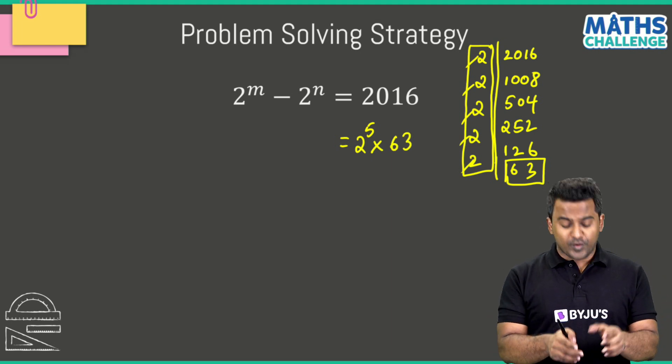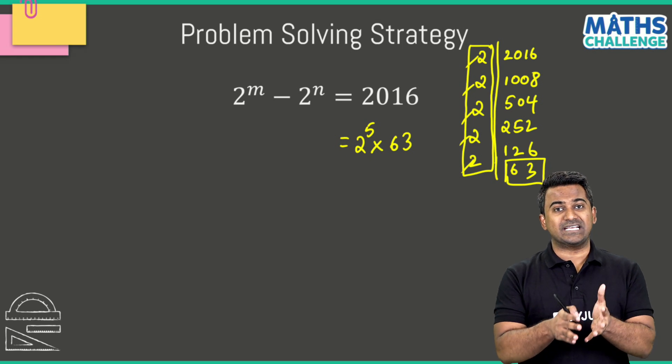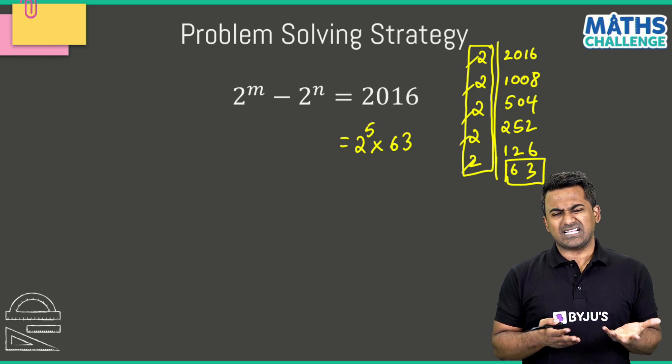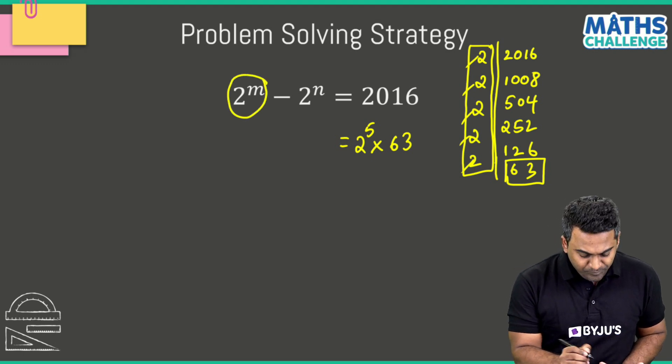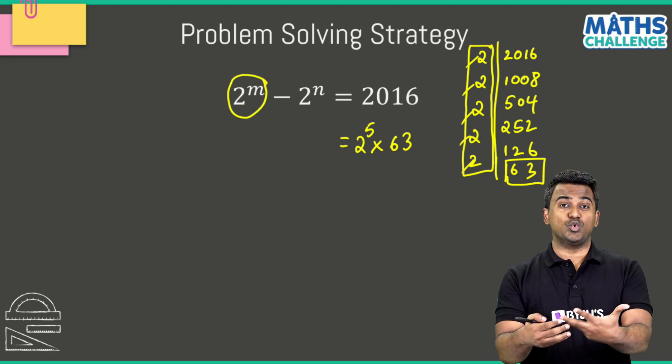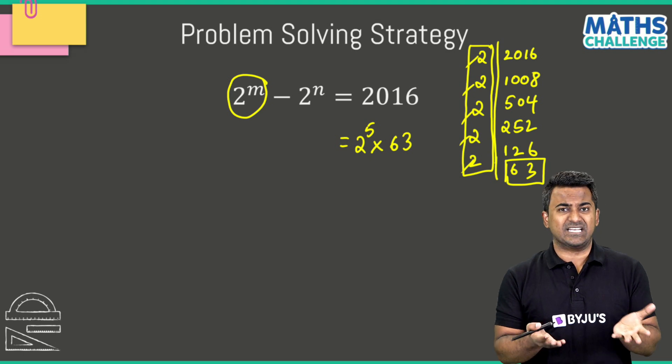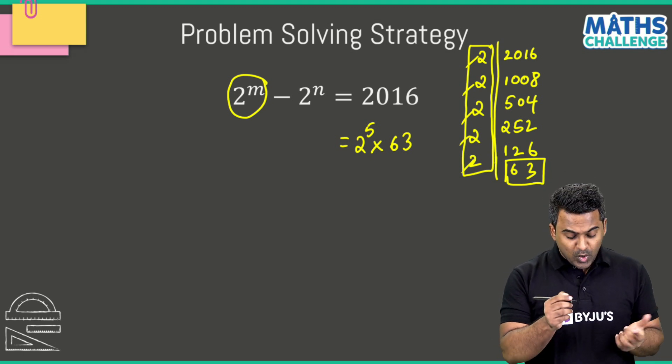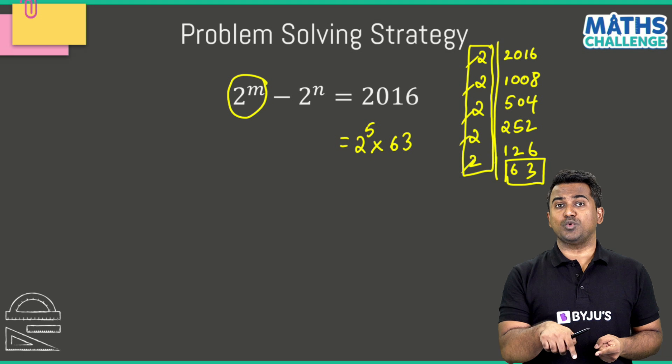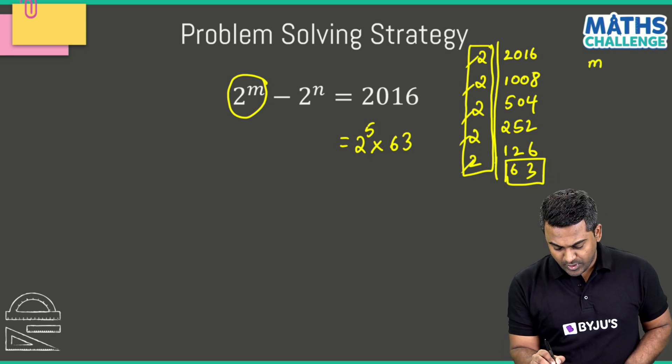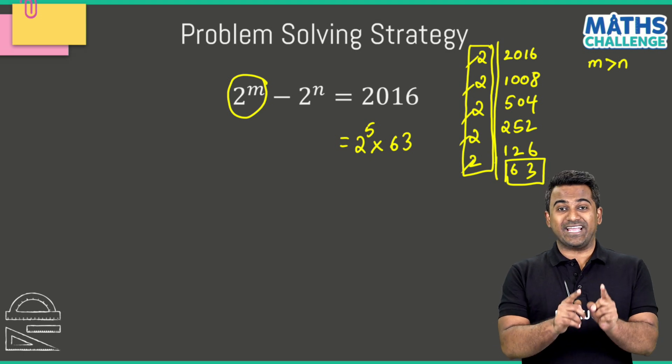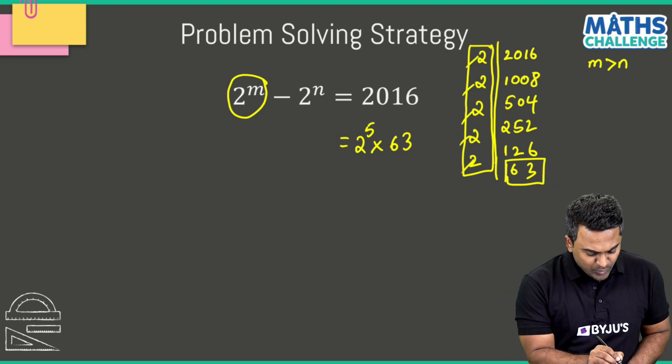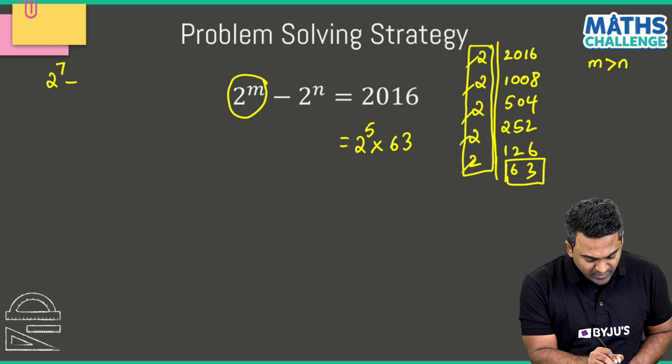Now I've got to convert the left hand side of the equation in a similar form. If you've understood this, 2^m has got to be bigger than 2^n because the right hand side is a positive number. So m has to be more than n. This is where the trick gets smarter.